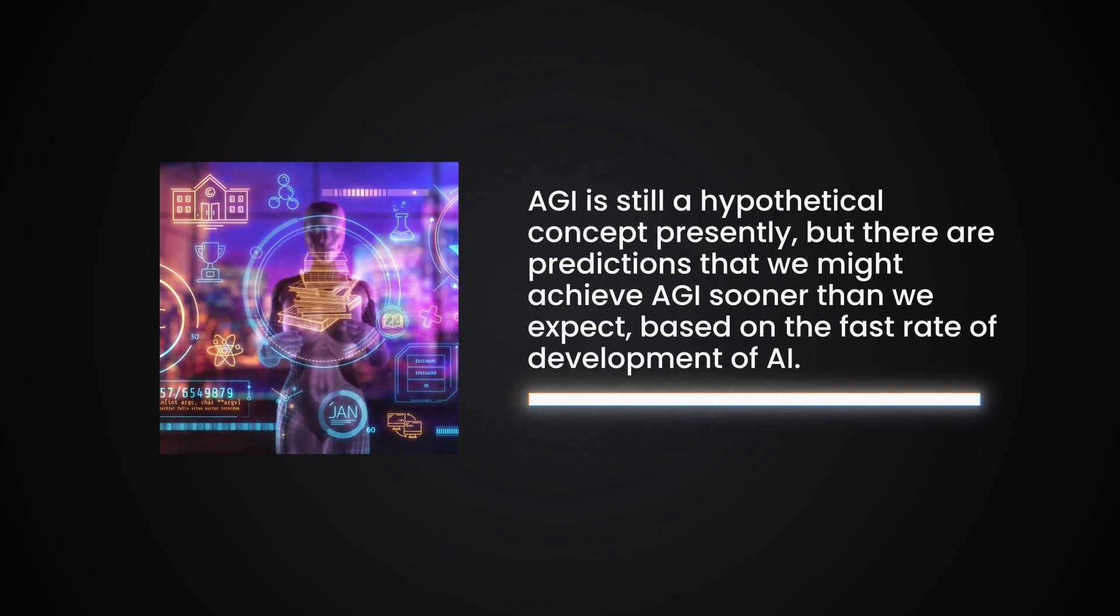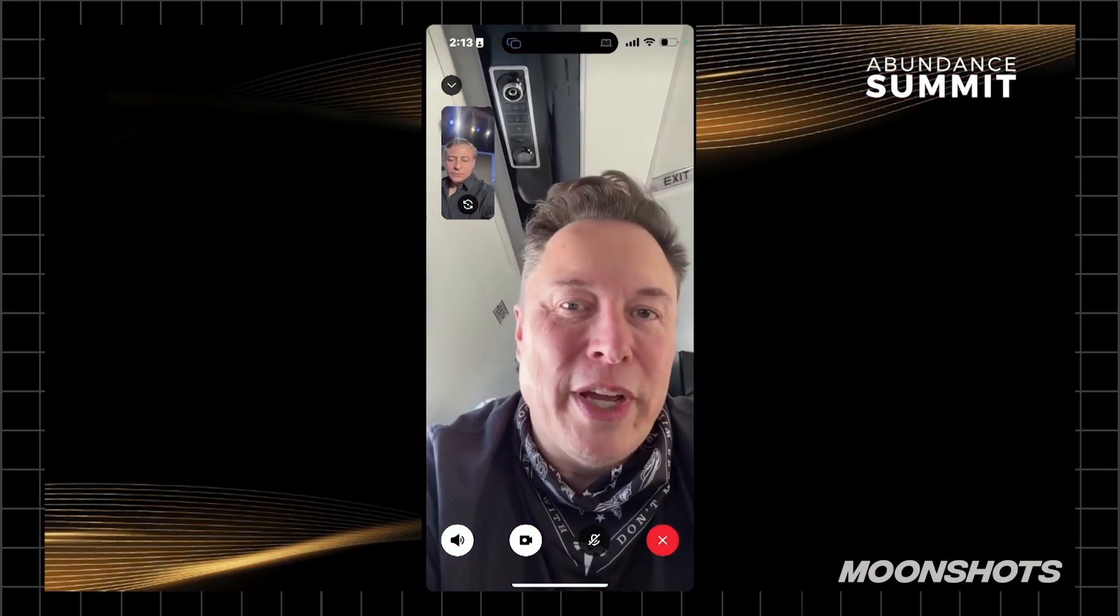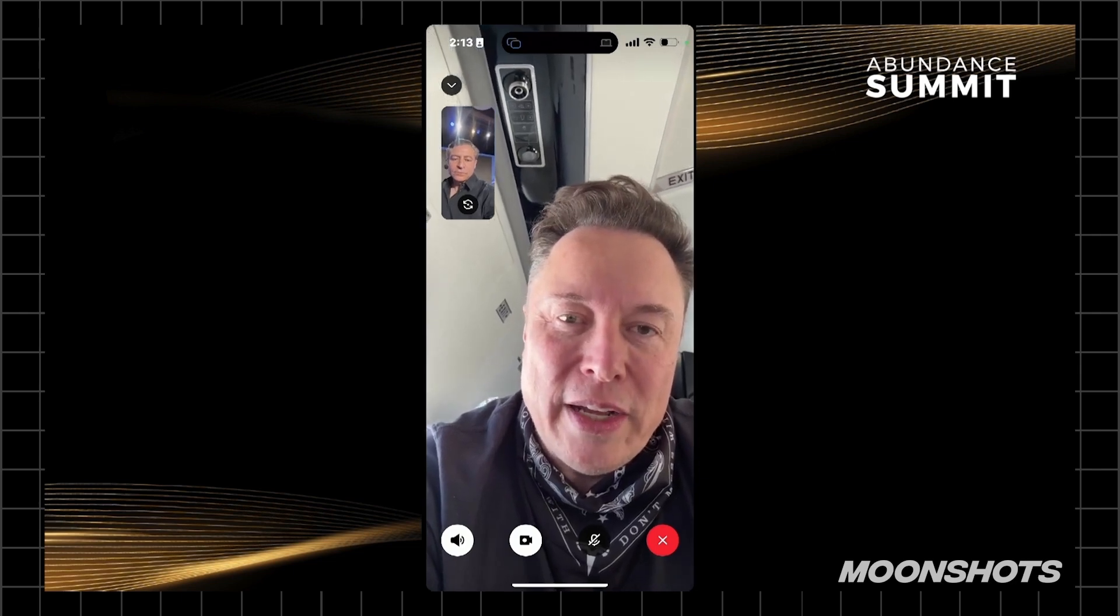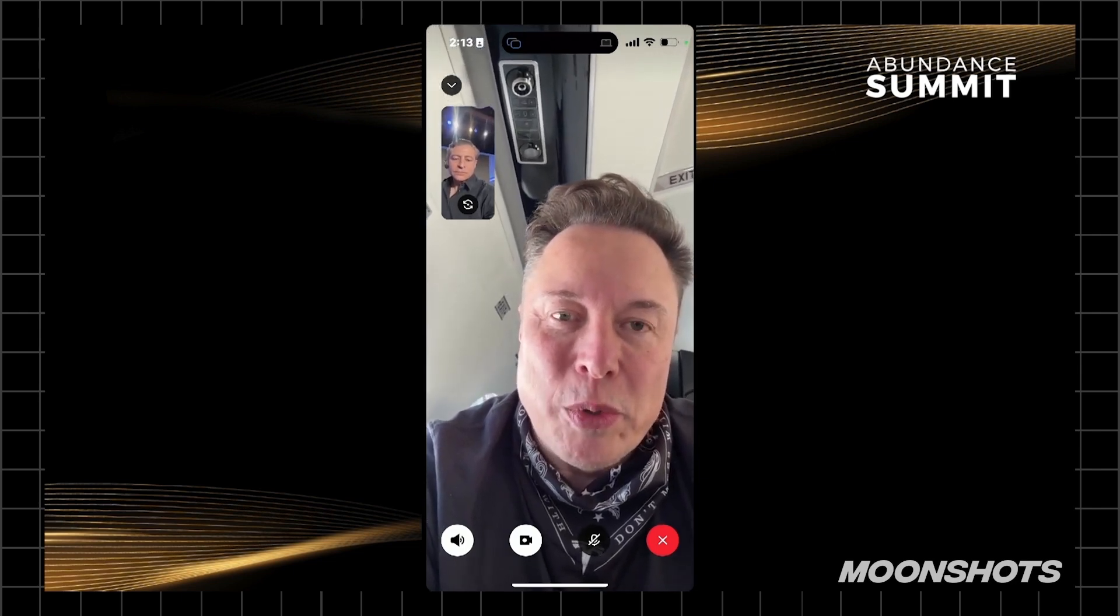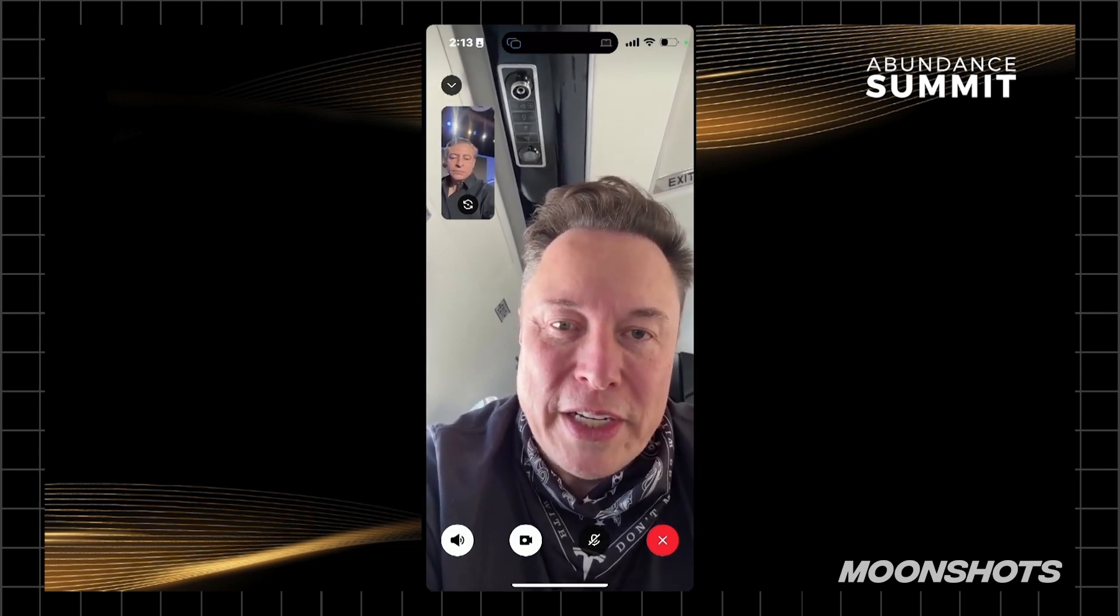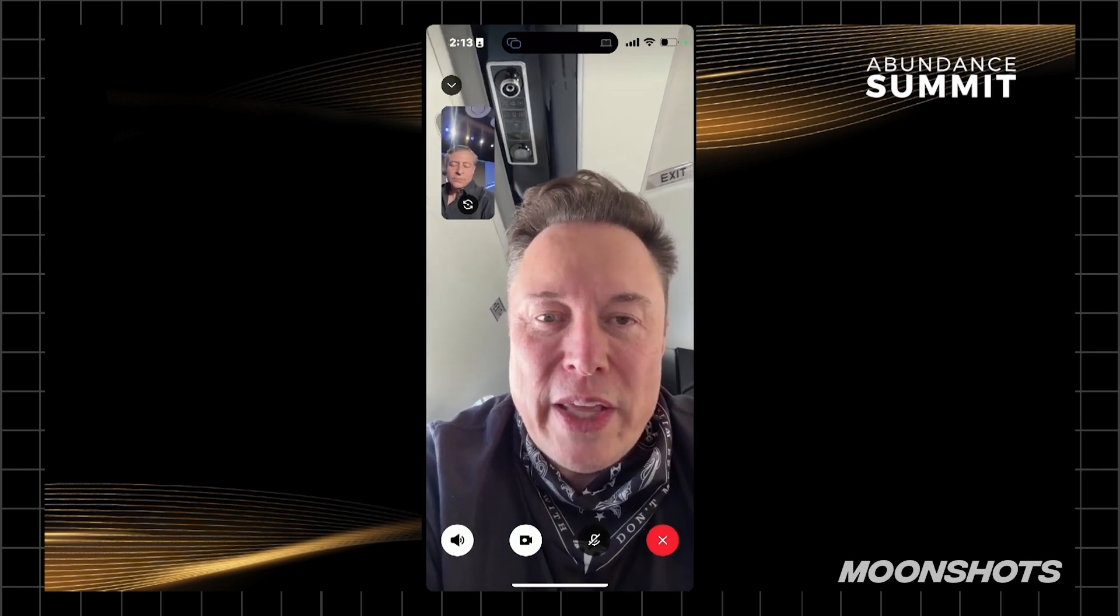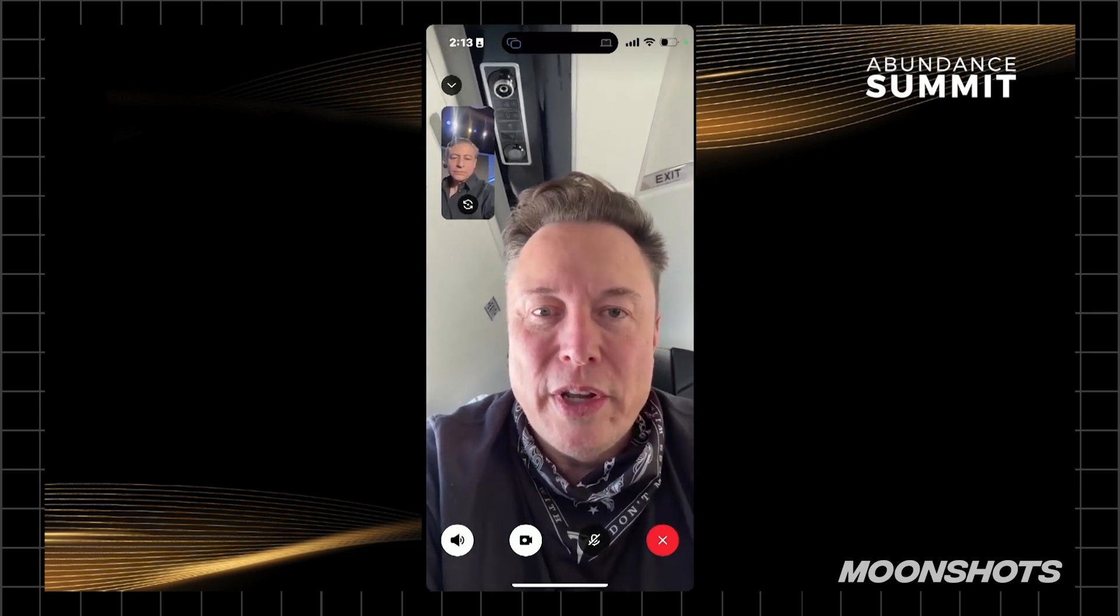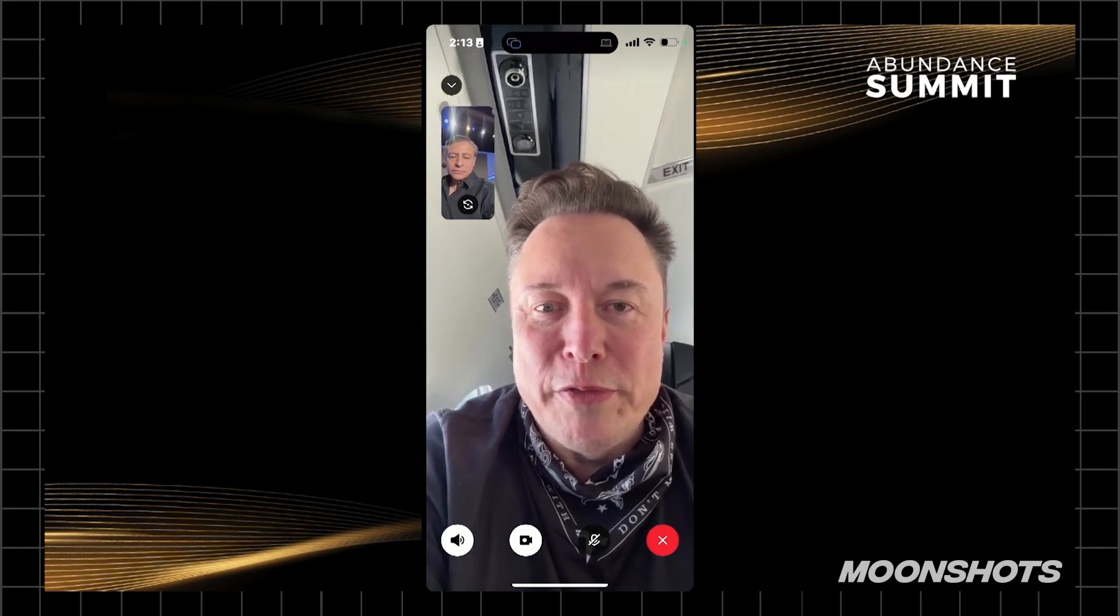Elon Musk says it better in this. The rate of change continues. That's why I think probably 2029 or maybe 2030 is where digital intelligence will probably exceed all human intelligence combined. And I think it's always helpful to look at these fundamental ratios, sort of physics first principles approach to looking at things.